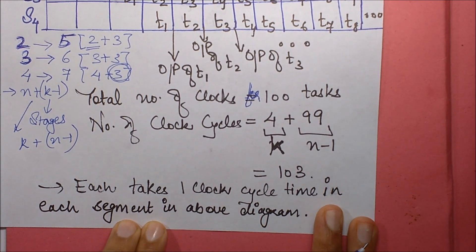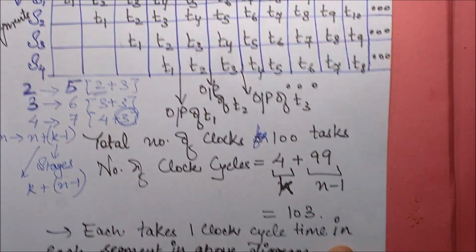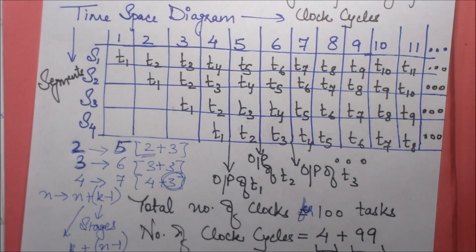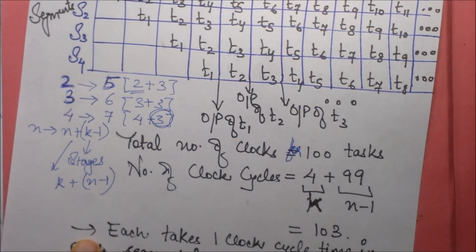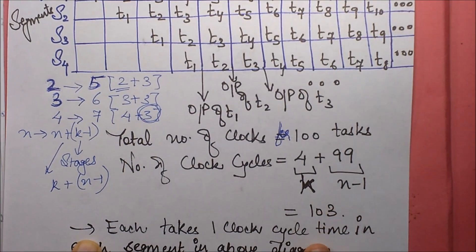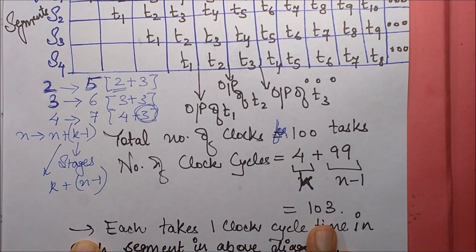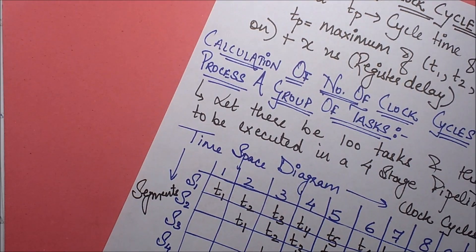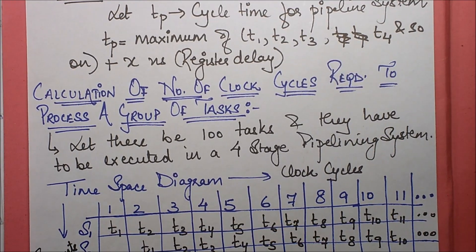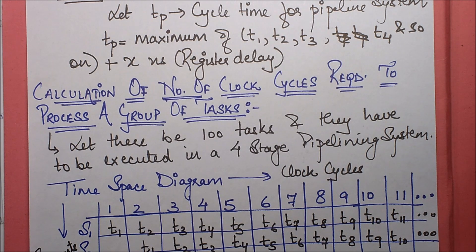We have assumed that each task takes only one clock cycle time, so the number of clock cycles is 103. That's all for this part of the numerical. In the next session, we are going to discuss speed-up in pipeline systems, so stay tuned. Thank you.